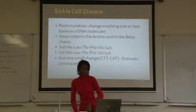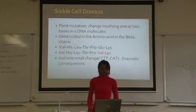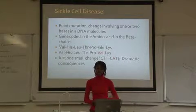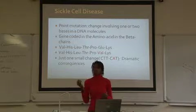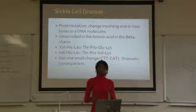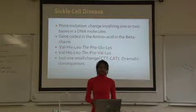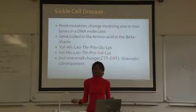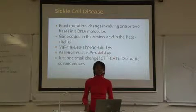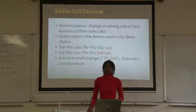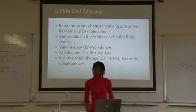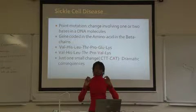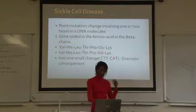Before getting into gene therapy, let's take the example of sickle cell disease. Sickle cell disease is caused by a change in the DNA sequence. We have hemoglobin, which has four polypeptides — two called alpha polypeptides and two called beta polypeptides. The mutation that causes sickle cell disease changes one amino acid in the beta polypeptide.